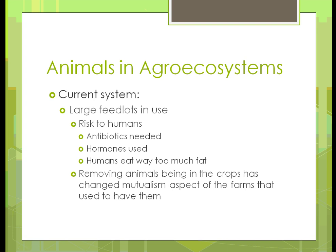The large feedlots are also a risk to humans because all the animals are in a confined area. They've had to start relying on antibiotics more because one animal will spread disease to another. They've also used hormones to make the animals grow faster so they can be put to market sooner. And one of the risks for humans is that we're eating way too much fat, and we should probably be looking at ways to reduce that.